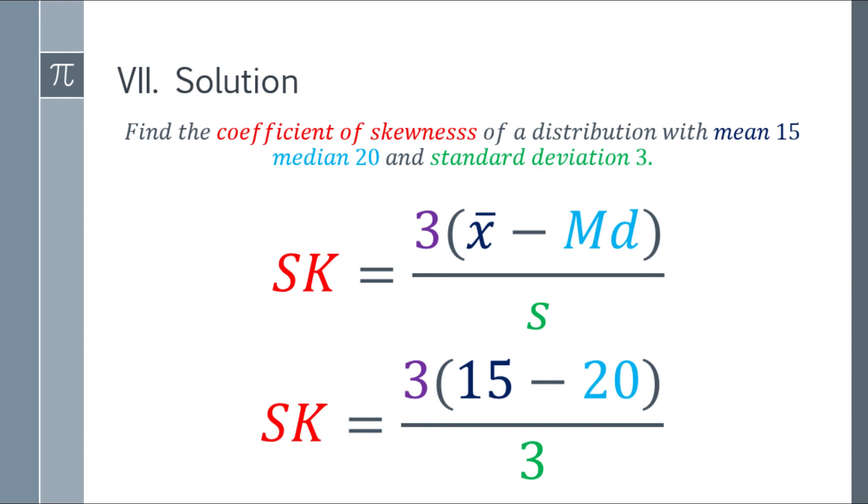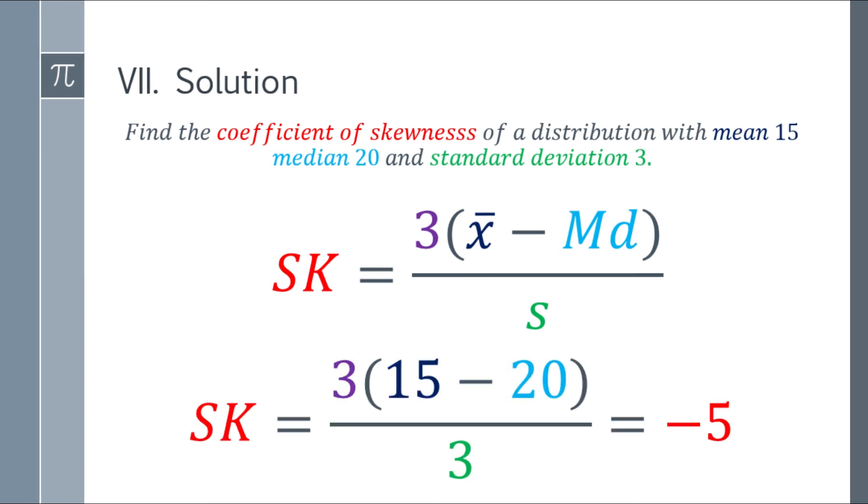Simplifying it, 15 minus 20, that will be negative 5. Multiply mo sa 3, that's negative 15. Divide by 3, and you will get an answer of negative 5.